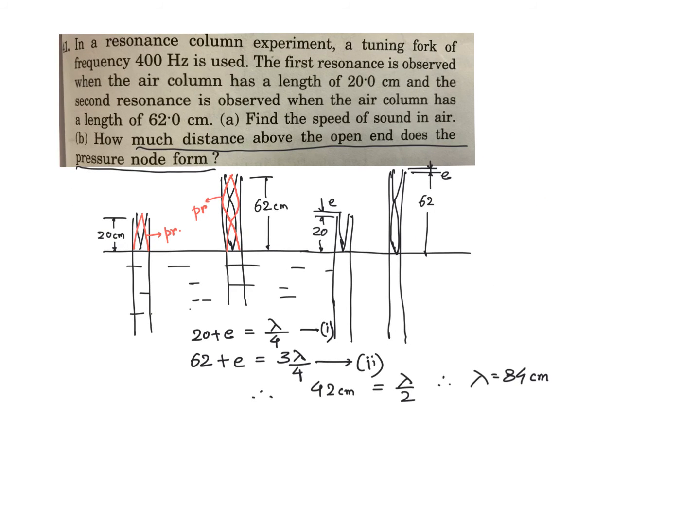And therefore, speed of sound. Speed of sound is frequency multiplied by 0.84 meter per second. How much is it? 336 m/s.